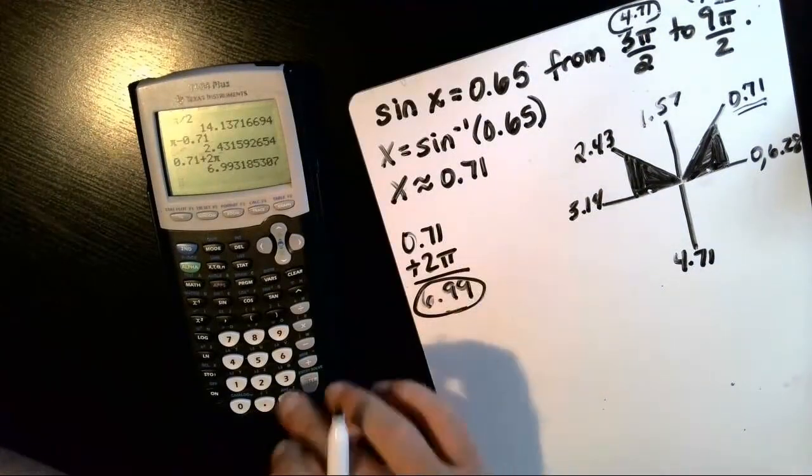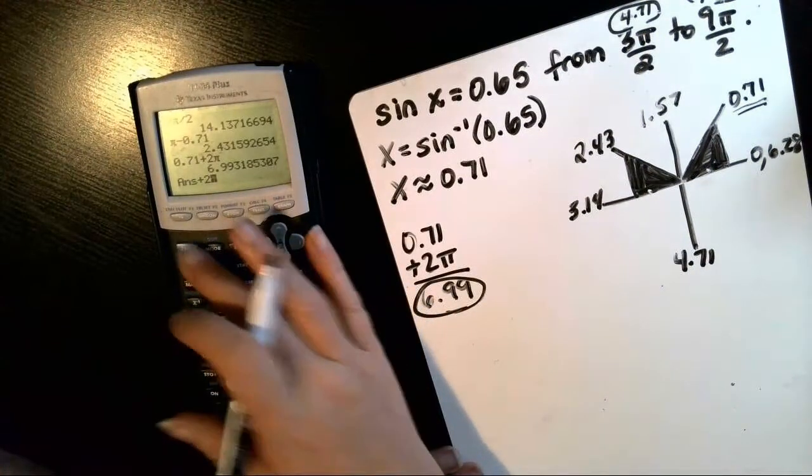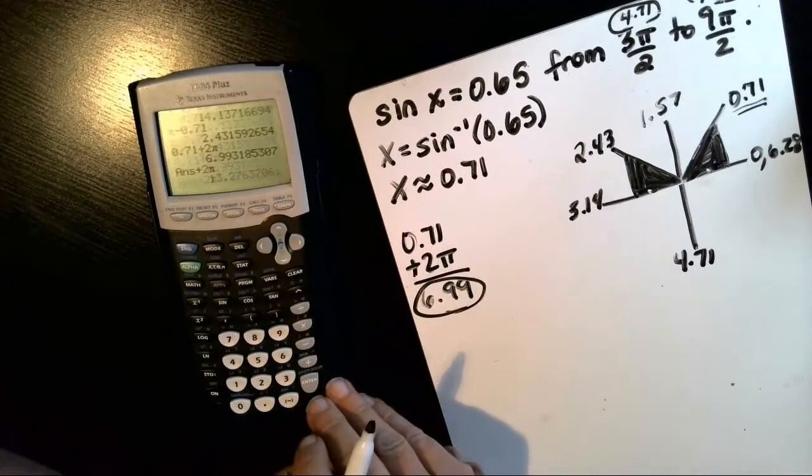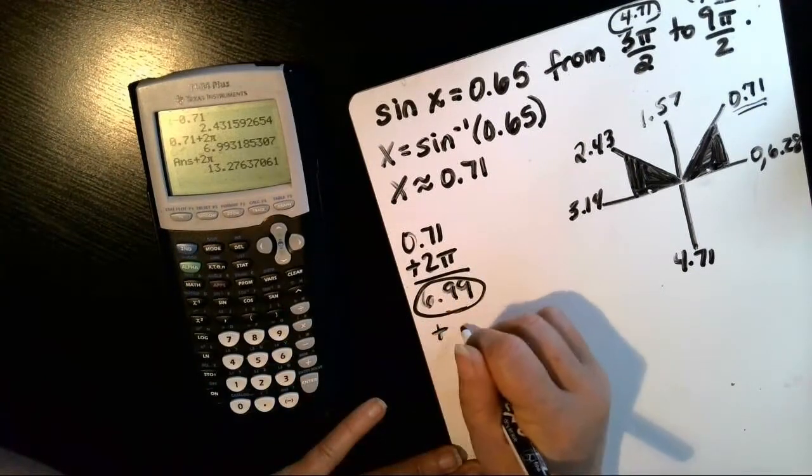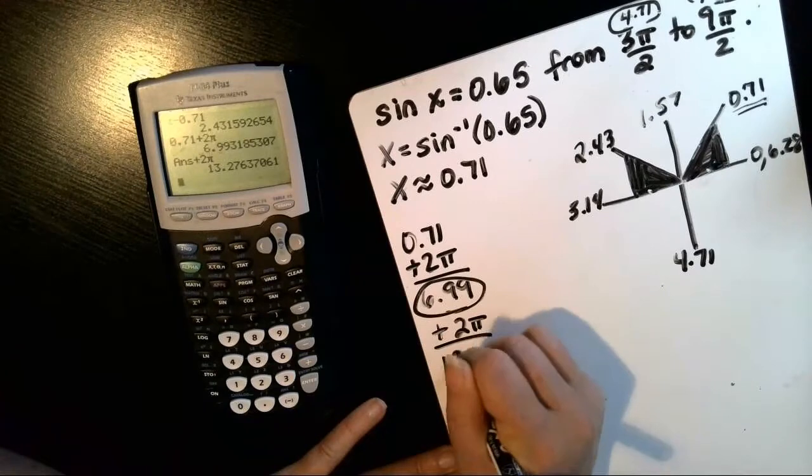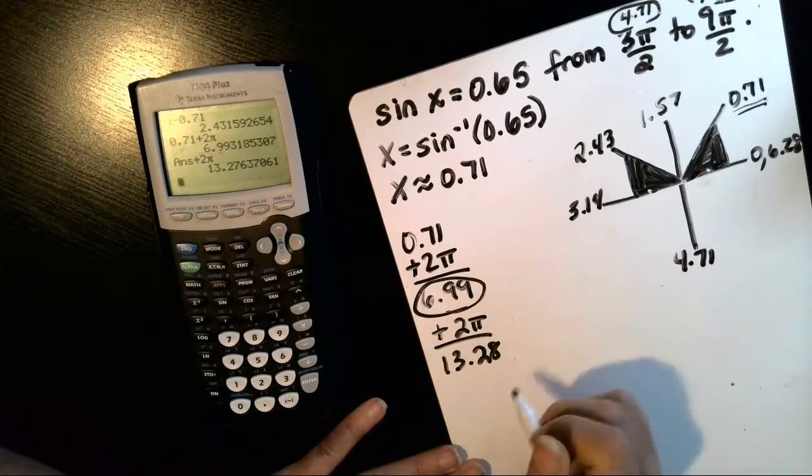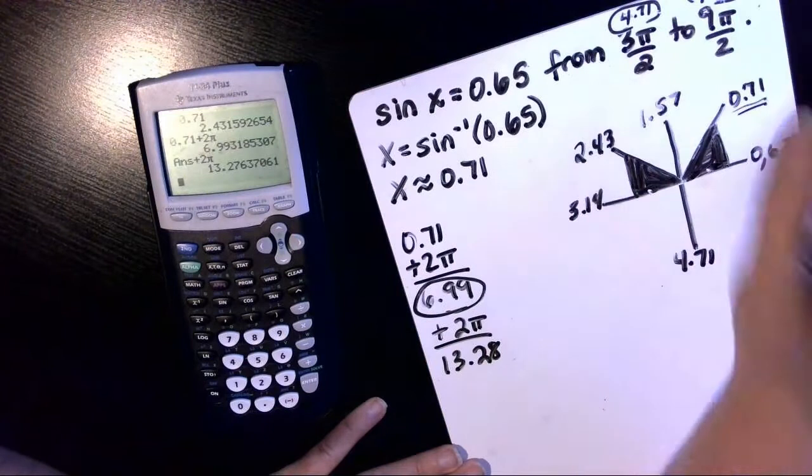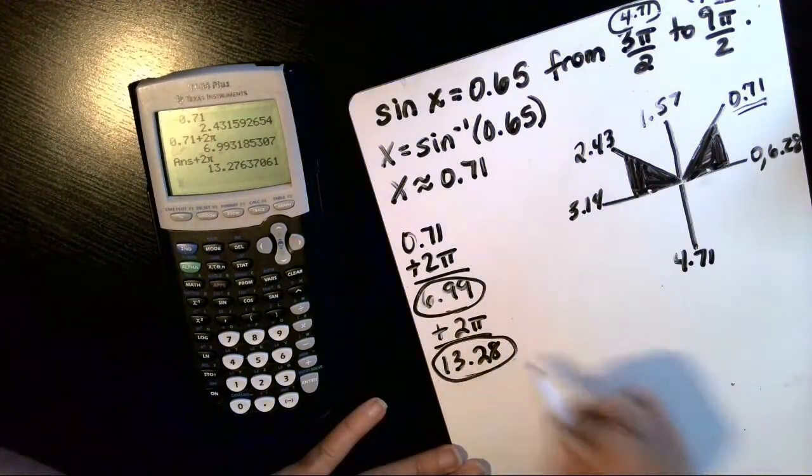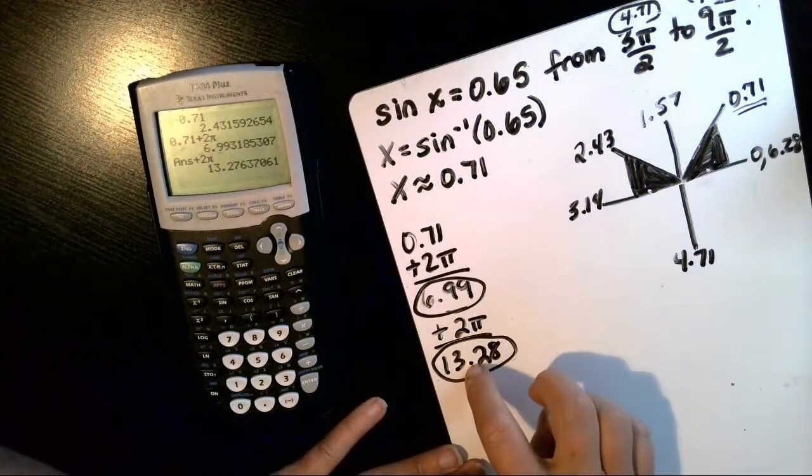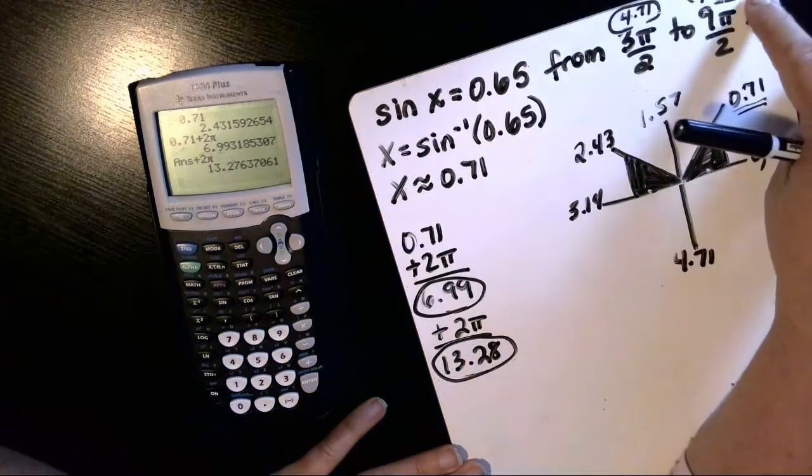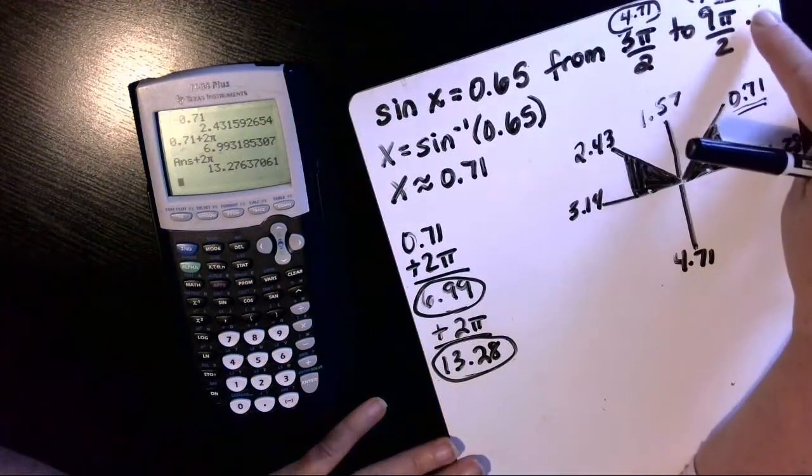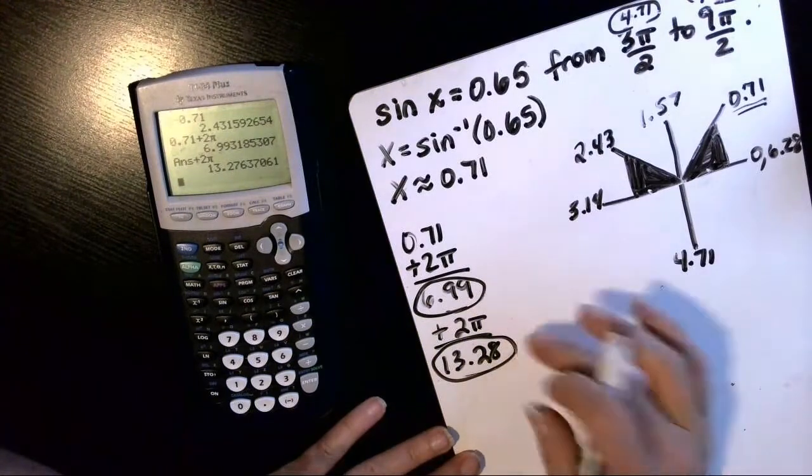If we add another 2 pi, so plus 2 pi, that is 13.28. And that is still within that range. So that would be a second answer. If I added another 2 pi, though, that would definitely be larger than 14.14. So that would be beyond 9 pi over 2. So I'll stop with those two.